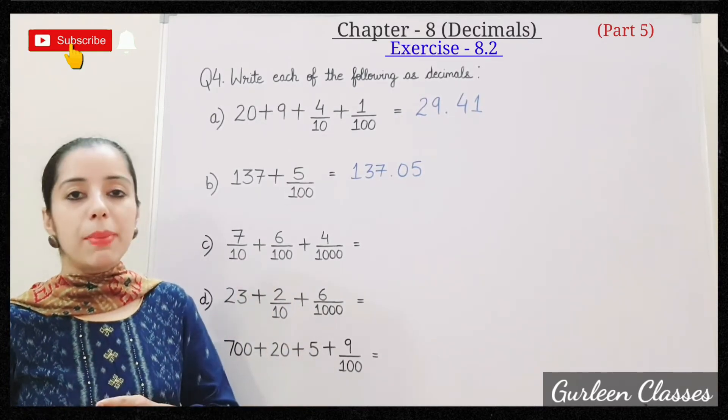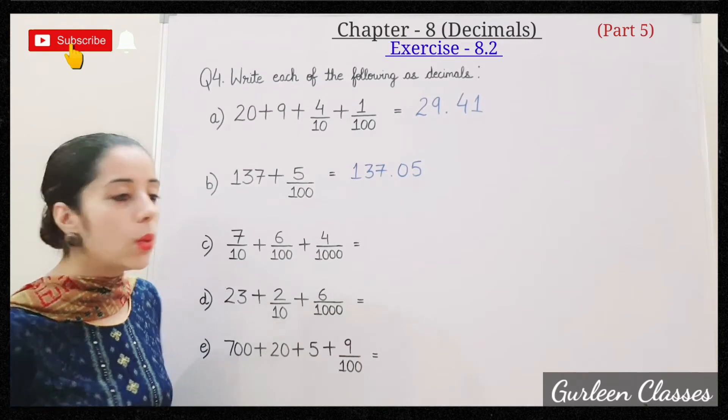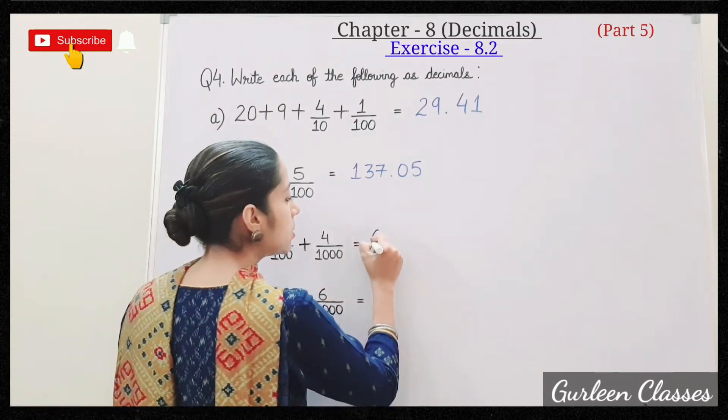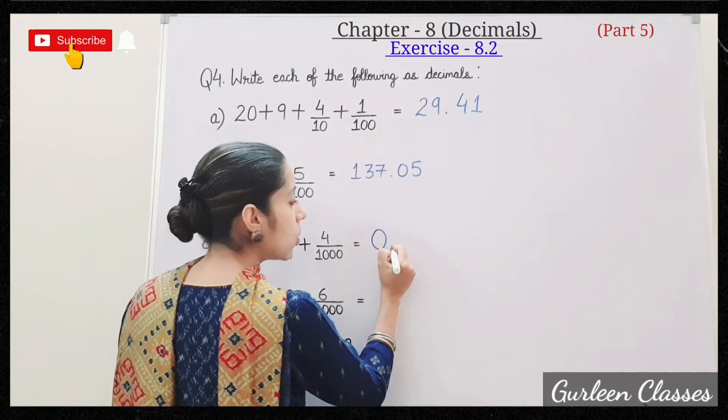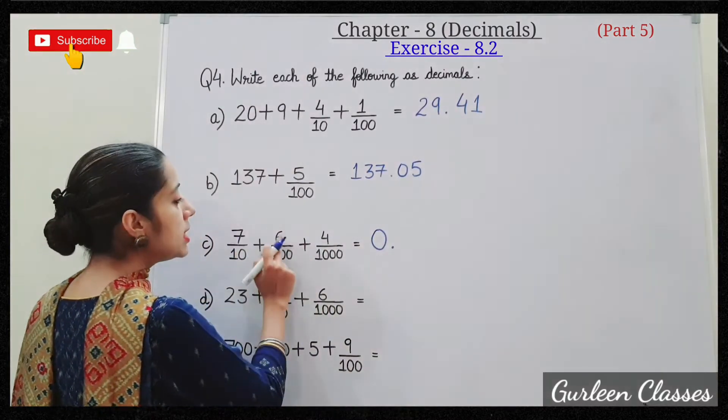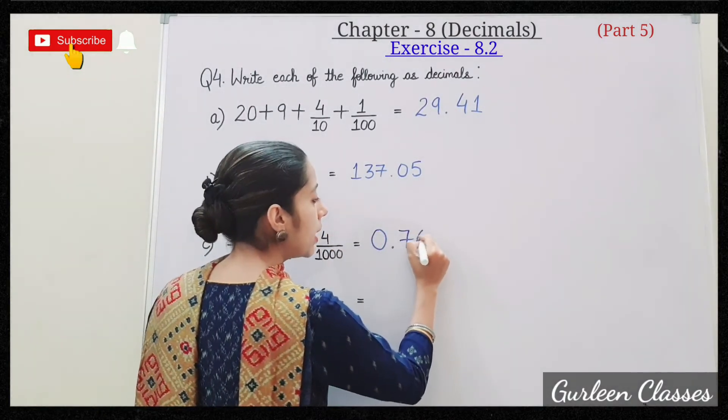C: 7 upon 10 plus 6 upon 100 plus 4 upon 1000. So here whole number part is missing, we will put 0 in the whole number part. Decimal point left side, that is whole number part. 0.764 is the decimal part.